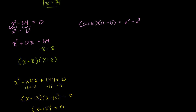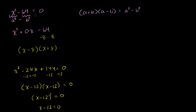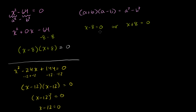Going back to the x squared minus 64 problem — I factored it but didn't solve the equation. Setting x minus 8 times x plus 8 equal to 0: either x minus 8 equals 0, giving x equals 8, or x plus 8 equals 0, giving x equals negative 8.